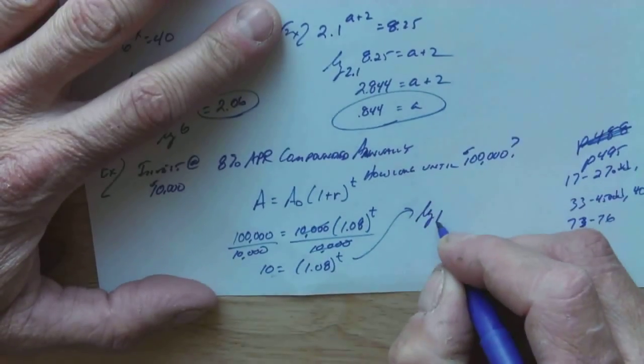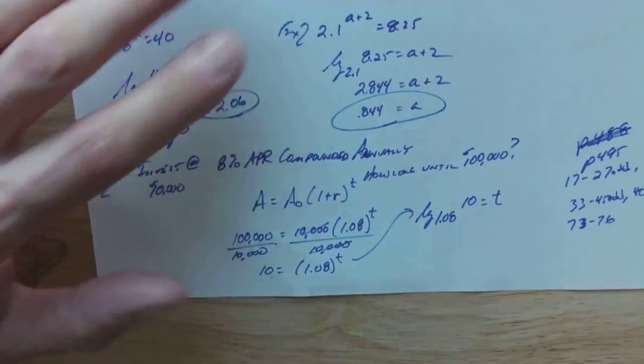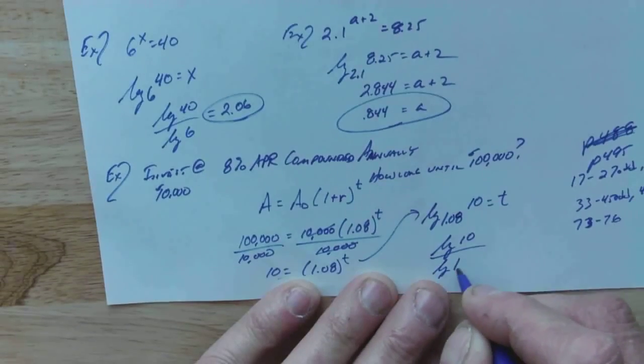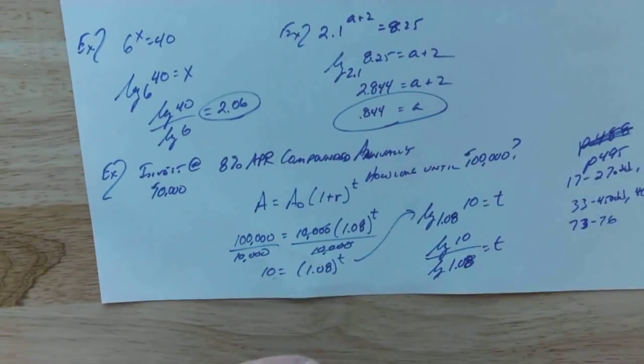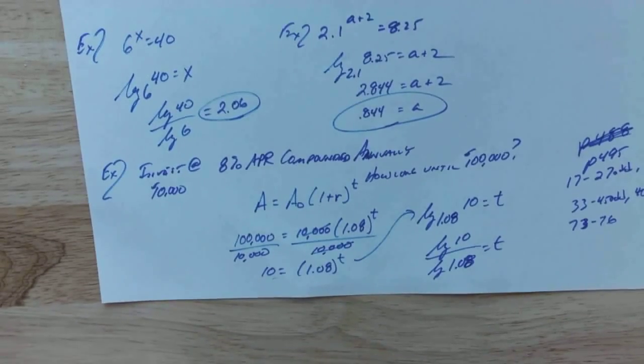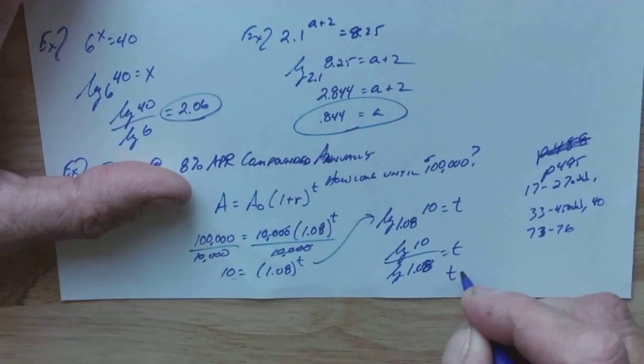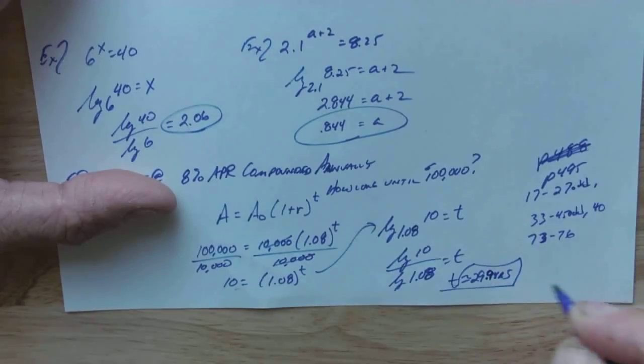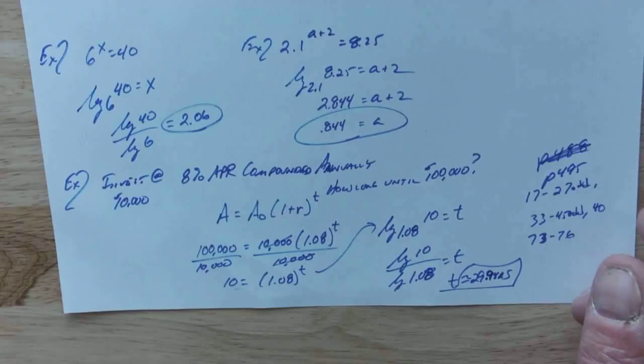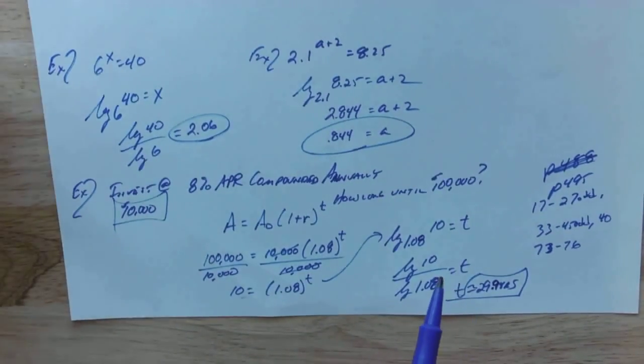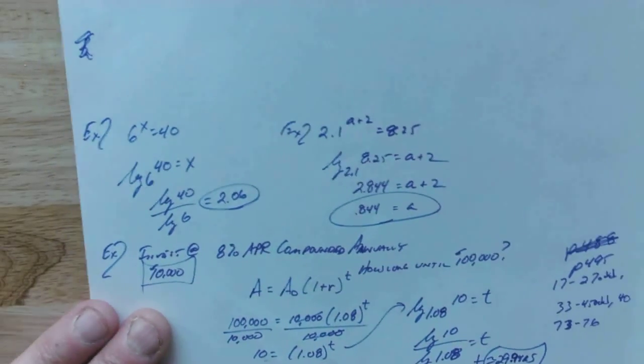Well, we have to rewrite it. My base is 1.08. My result is 10. And my exponent is t. So, here we go. Now, let's do a little change of base. So, let's go log of 10 divided by log of 1.08. T is approximately 29.9 years. So, let's think about that. 8%. The reason I picked that is that's kind of the percent rate that over time, long period of time, the stock market has returned. And so, if you take $10,000, set it aside and forget you never had it, in about 30 years, you're going to have about $100,000 if history continues to repeat itself. Investing. Not a bad thing.